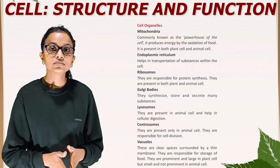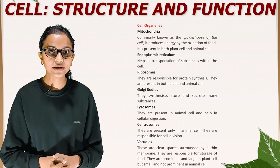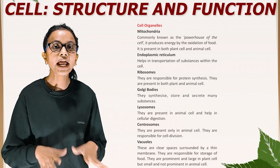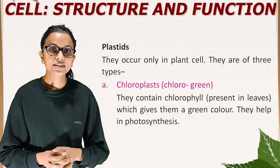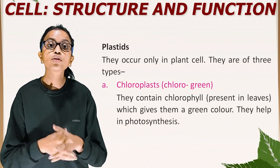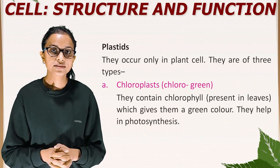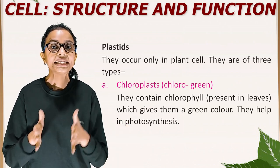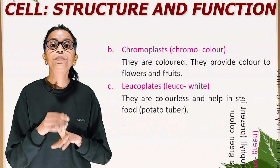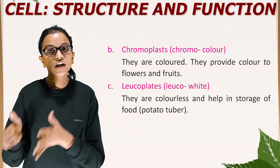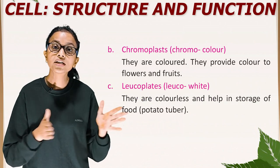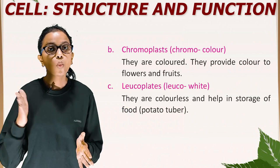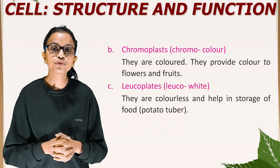Vacuoles: these are clear spaces surrounded by a thin membrane. They are responsible for storage of food. They are prominent and large in plant cells but small and not prominent in animal cells. Plastids: they occur only in plant cells and are of three types. A) Chloroplasts — 'chloro' means green — they contain chlorophyll present in leaves, which gives them a green color, and they help in photosynthesis. B) Chromoplasts — 'chromo' means color — they are colored and provide color to flowers and fruits. C) Leucoplasts — 'leuko' means white — they are colorless and help in storage of food, for example in potato tubers.